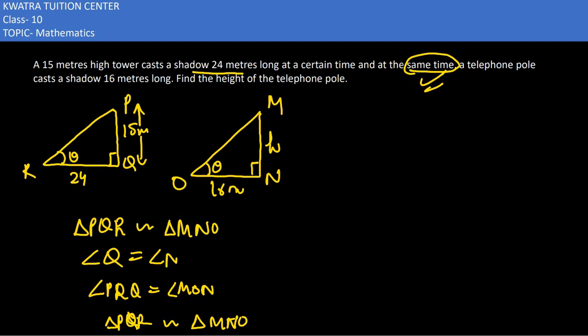Now we can write that as they are similar, their sides are proportional. How do you write sides for sides? You will write as PQ over MN is proportional to RQ over ON.